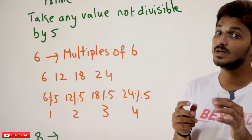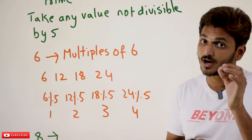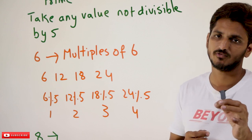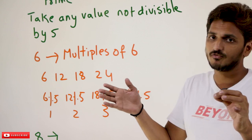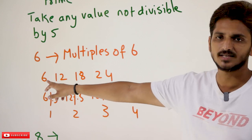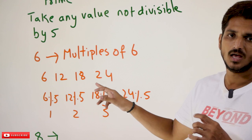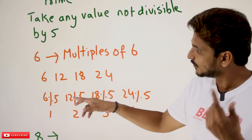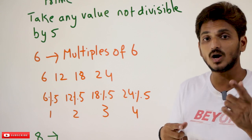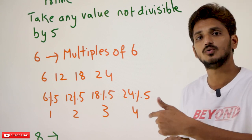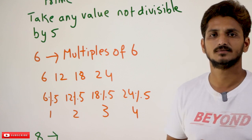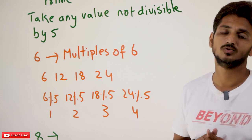You take any number that is not divisible by 5. Because 5 is a prime number, you take any number that is not divisible by 5. You take the multiples of that number a — here a is 6. If you do the modulus for each number, it is going to generate the sequence 1, 2, 3, 4, 0 — again 1, 2, 3, 4, 0 — again like that. These are the modulus values it is going to generate.